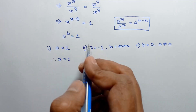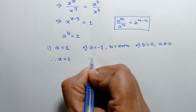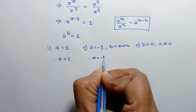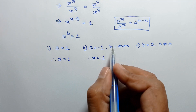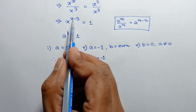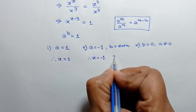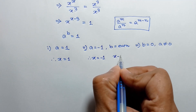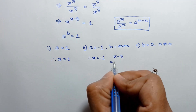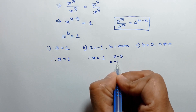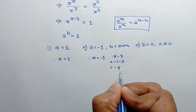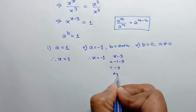According to the second case, a is equal to negative one, so the value of x is negative one. And b is even, so the power b means x minus three. Substituting x equals negative one: negative one minus three is equal to negative four, which is even. So x is equal to negative one is a solution of this equation.